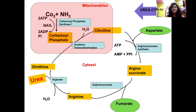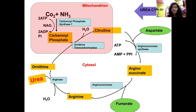Note: there is also carbamoyl phosphate synthase 2, which is a cytosolic enzyme responsible for synthesis of purines — do not confuse the two. Once carbamoyl phosphate is synthesized in the mitochondria, it combines with ornithine. Carbamoyl phosphate transfers its carbamoyl group to ornithine to form citrulline. The enzyme catalyzing this reaction is ornithine transcarbamylase. This reaction also occurs in the mitochondria.